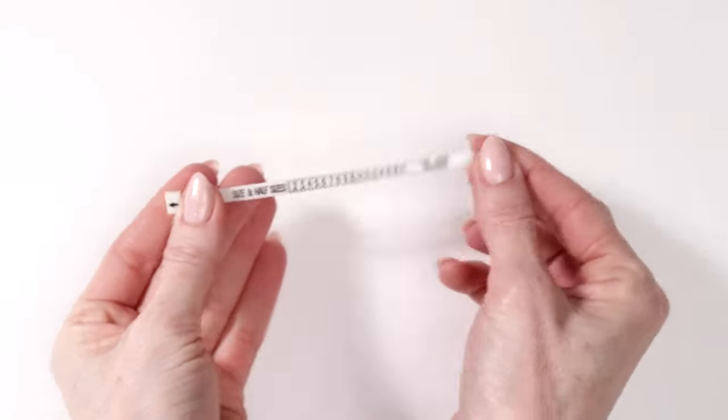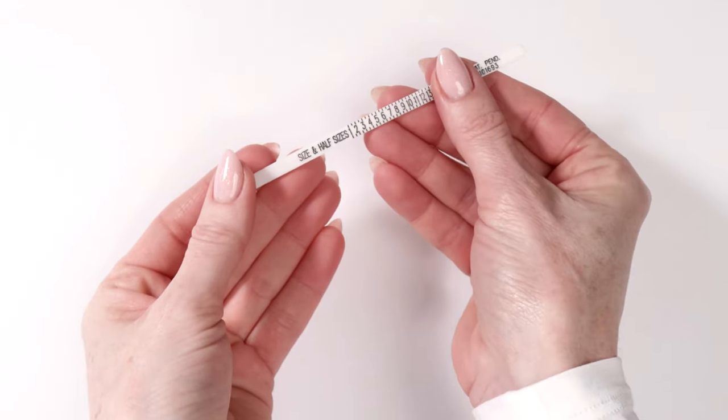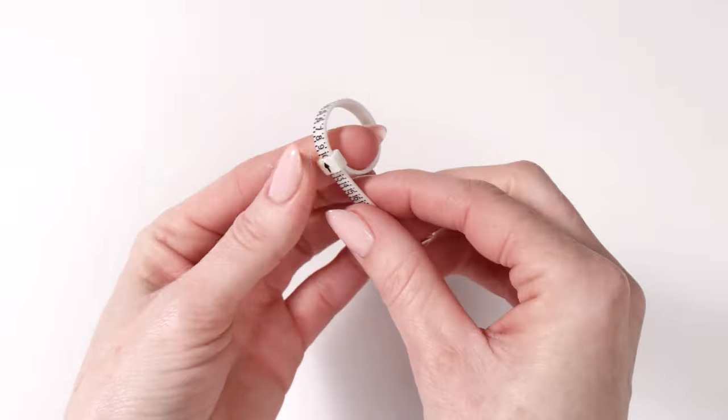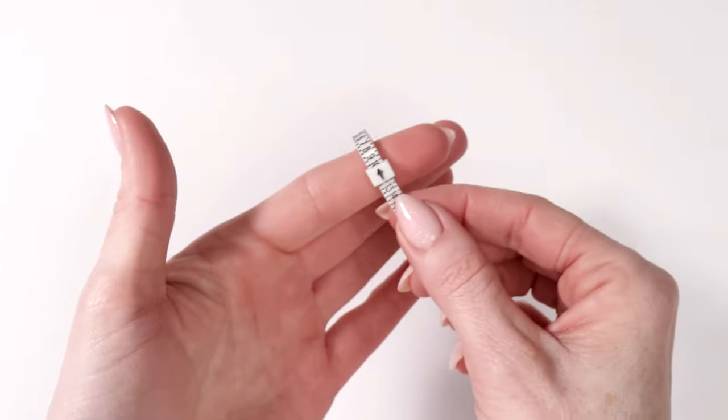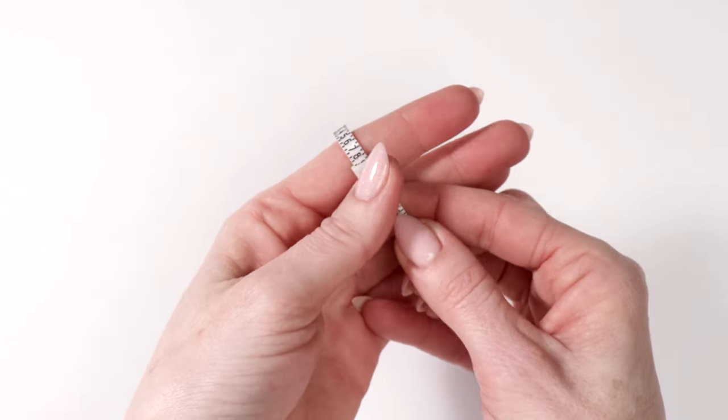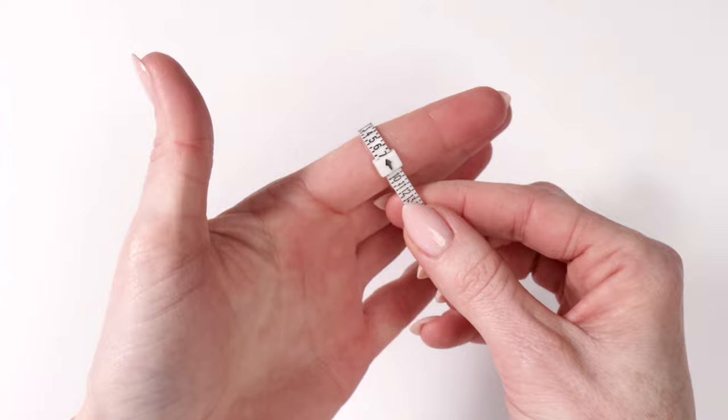We're going to start with the easiest one and that would be using a ring sizer. You start by creating a loop. Make sure it's big enough so it can pass easily through your finger and then you pull just until it snugs your knuckle.